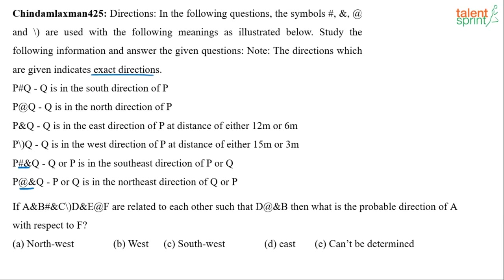Let's take up the first question. It says: A ampersand B hash-ampersand C whatever D ampersand E at-rate F are related to each other such that D at-rate-ampersand B must be satisfied. The question asks: what is the probable direction of A with respect to F?